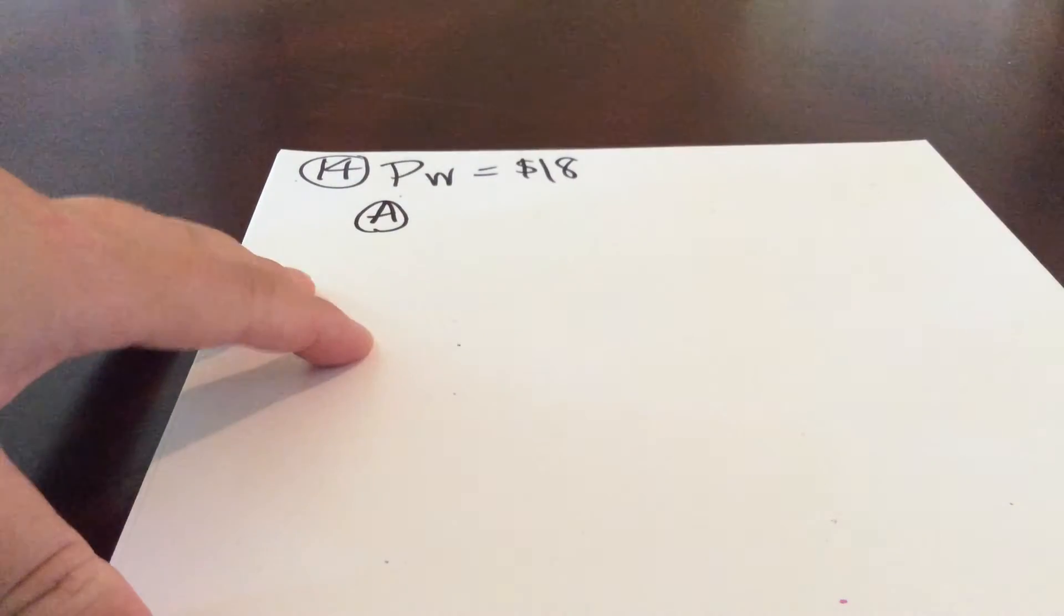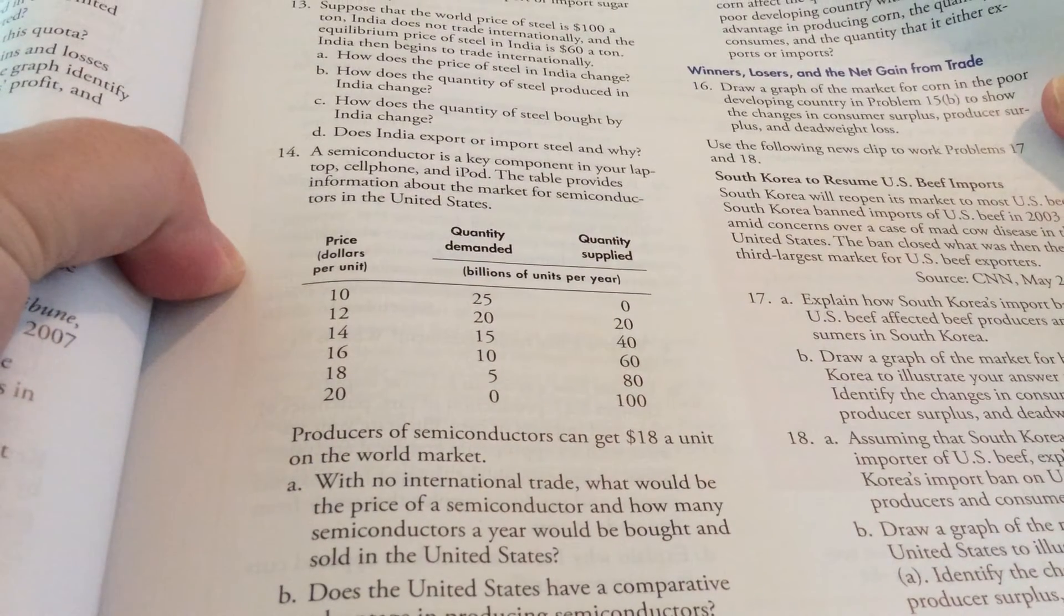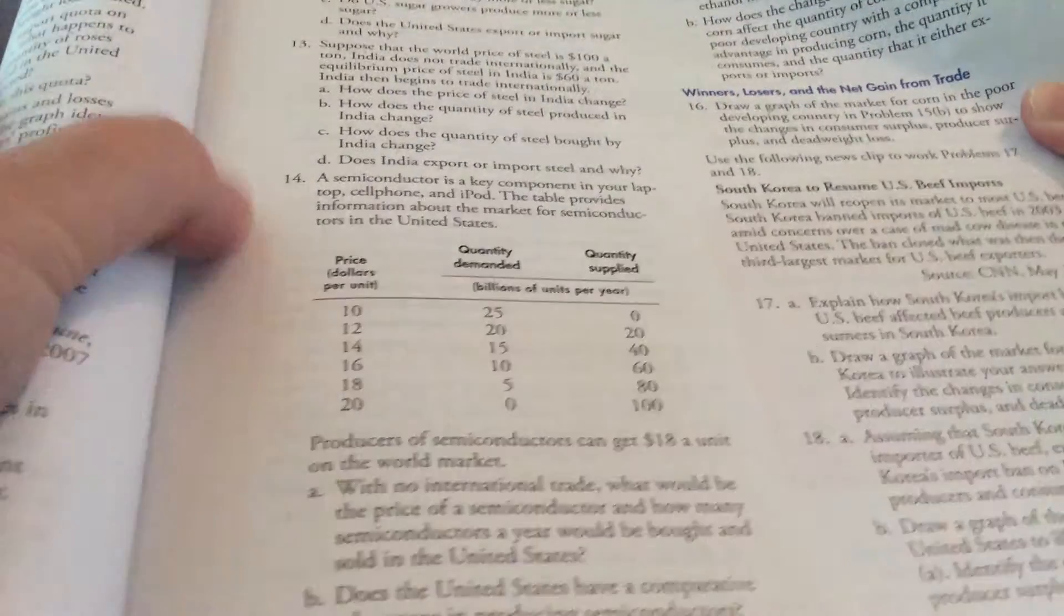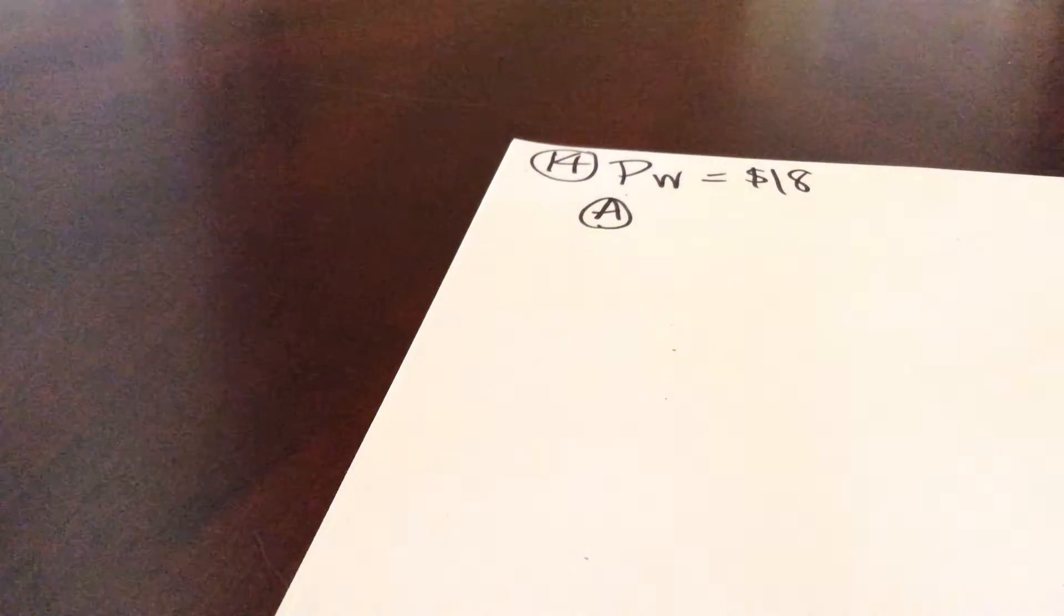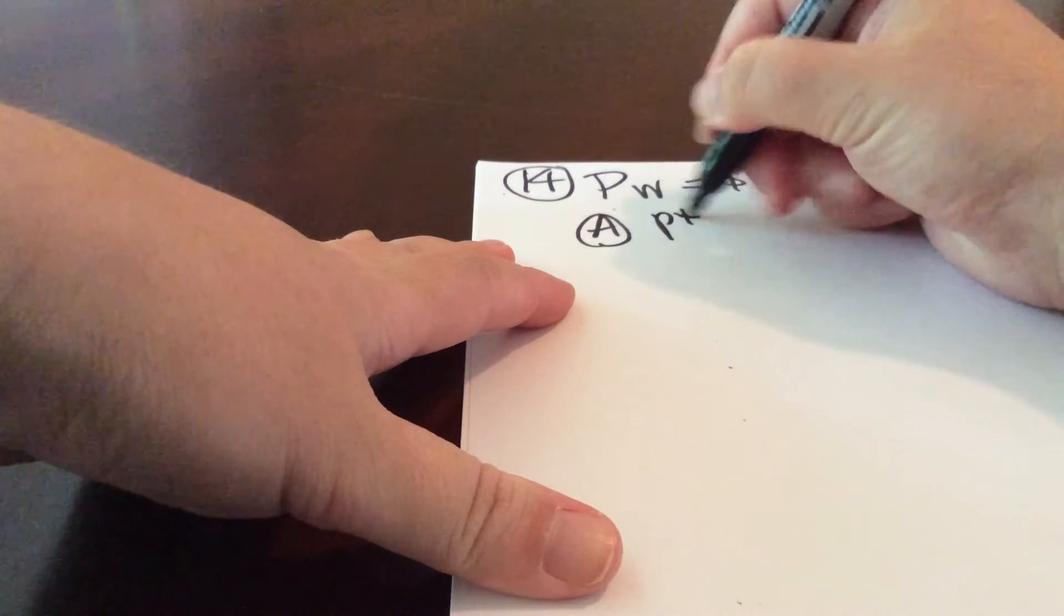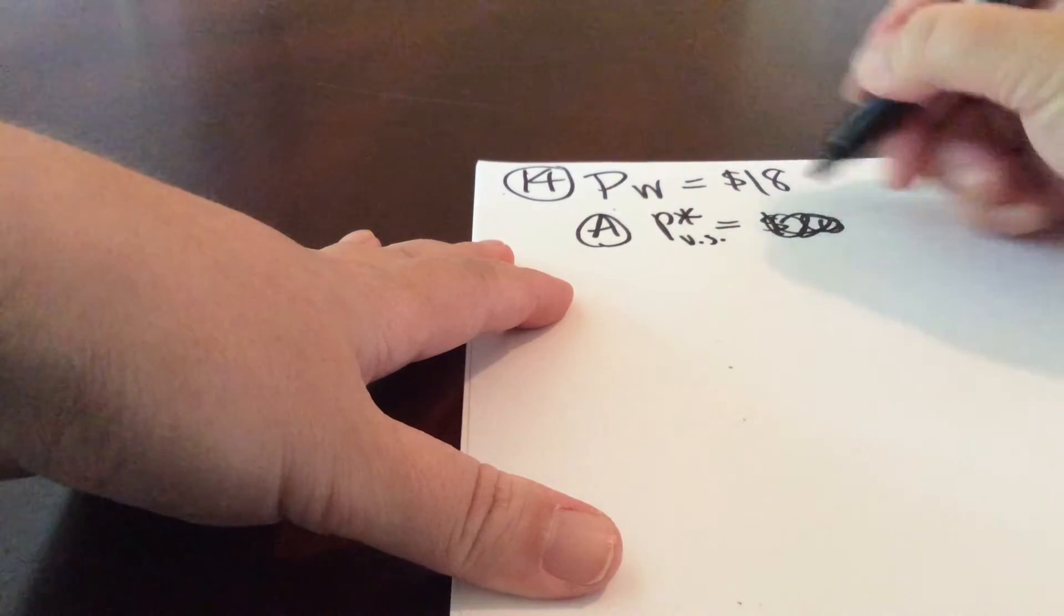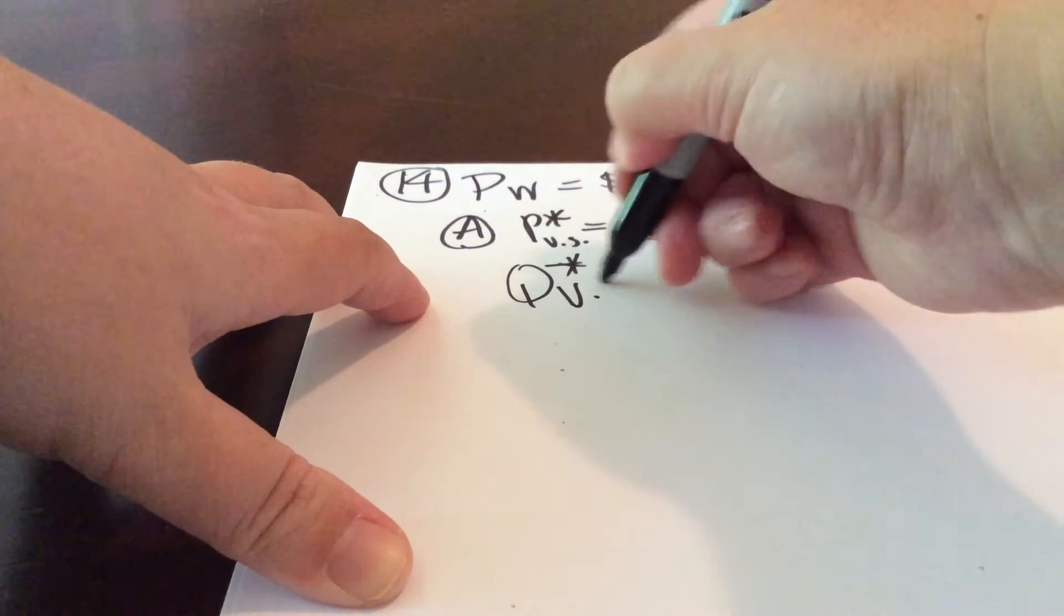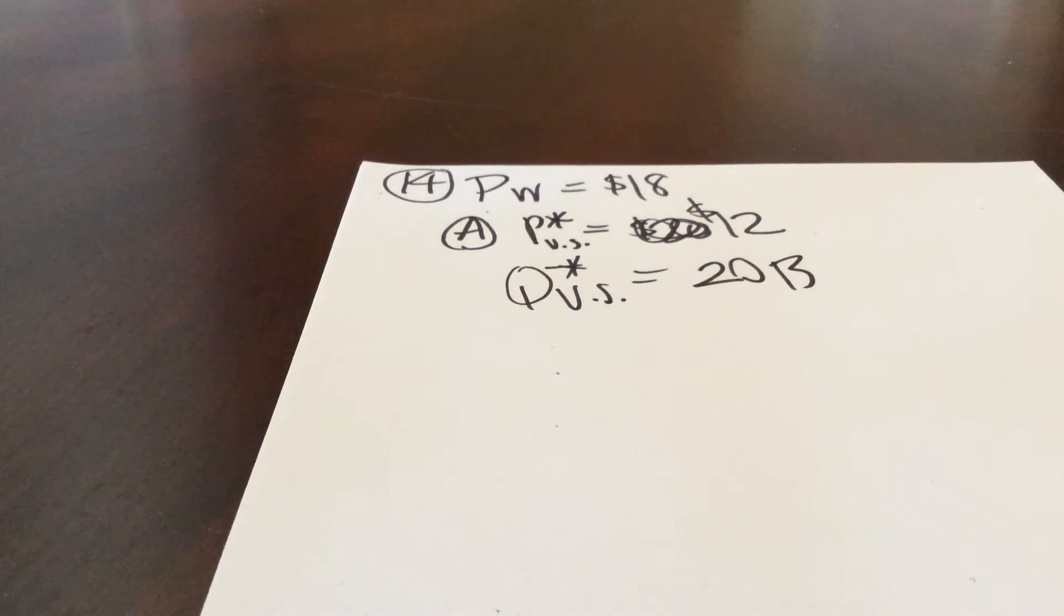So question A, with no international trade, what would be the price of a semiconductor, and what would be the quantity bought and sold in the United States? So again, let's refer back to the market schedule here for the United States. Where's our equilibrium? That's all this question is asking us to find. Our equilibrium, recall, is simply the price where quantity demanded equals quantity supplied. So hopefully you can see that at a price of 12, quantity demanded is 20 billion units, quantity supplied is a matching 20 billion units per year. So for our answer here, our equilibrium price in the U.S. is $12 per unit, and our equilibrium quantity in the U.S. is 20 billion semiconductors per year.